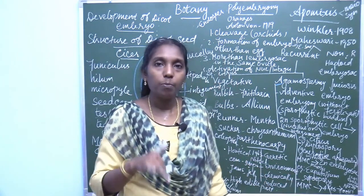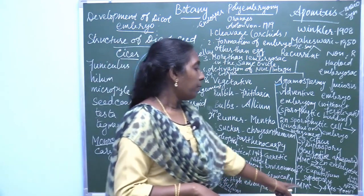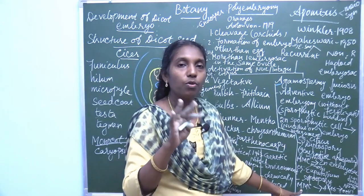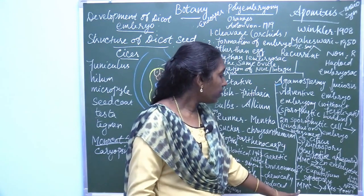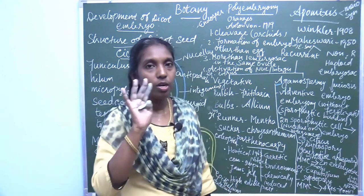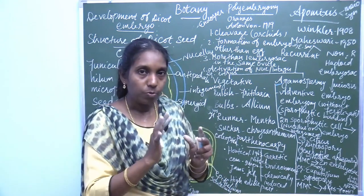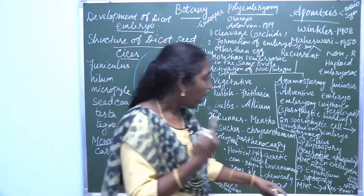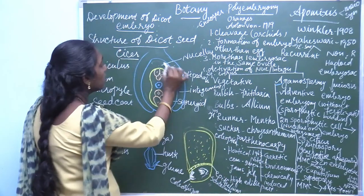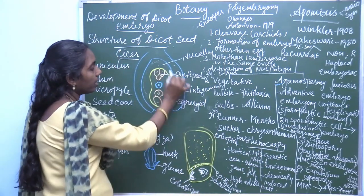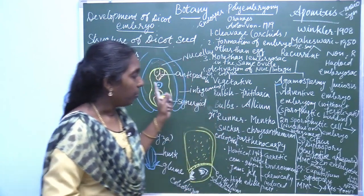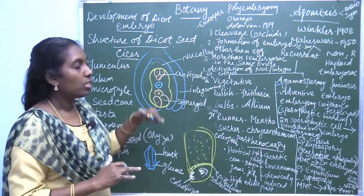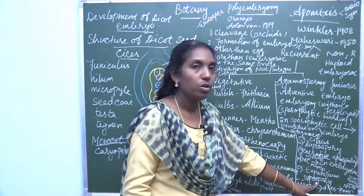In apospory, the megaspore mother cell undergoes meiotic division and produces four megaspores. But these megaspores disintegrate and activate the nucellar tissue. This activated nucellar tissue produces the diploid embryo. This process is called apospory.